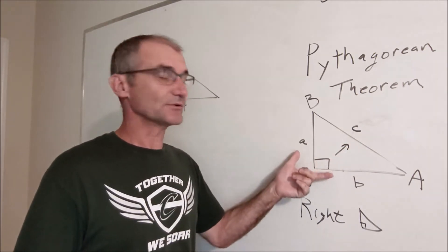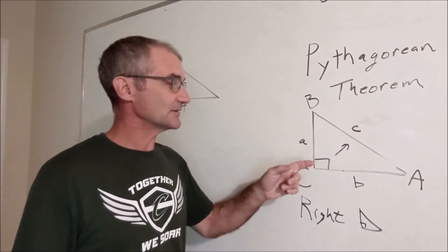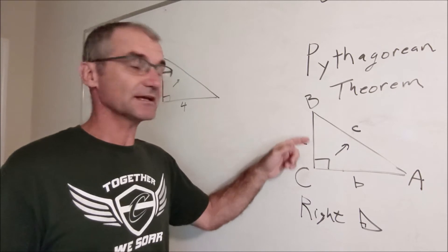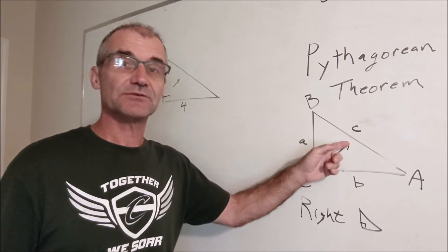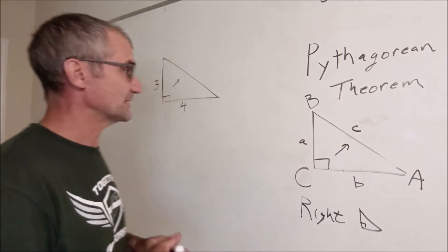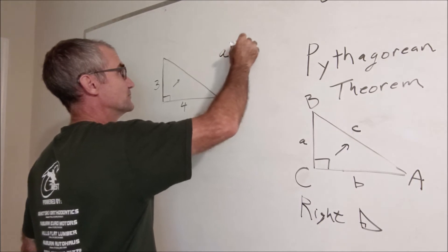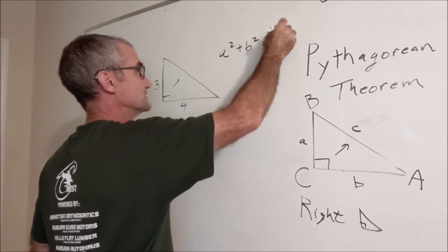You have to have two variables. You have to have two of those things to find the third. So the Pythagorean Theorem says if you have one leg and another leg you can find the hypotenuse, or if you have the hypotenuse and a leg you can find the other leg. The Pythagorean Theorem is a squared plus b squared is equal to c squared.